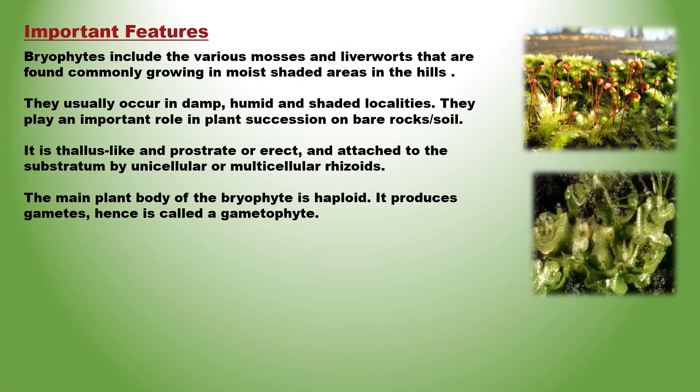Important features: the plant body is more differentiated than that of algae. It is thallus-like. The plant body could be prostrate, horizontally placed or erect, and attached to the substratum by unicellular or multicellular rhizoids. They are very small plants and do not have true roots, stem or leaves. They may possess root-like, stem-like or leaf-like structures.